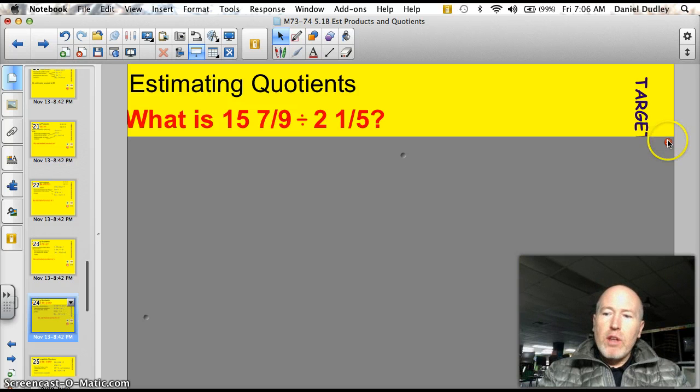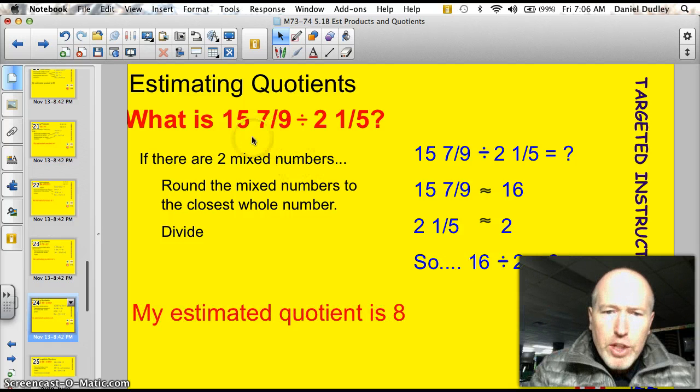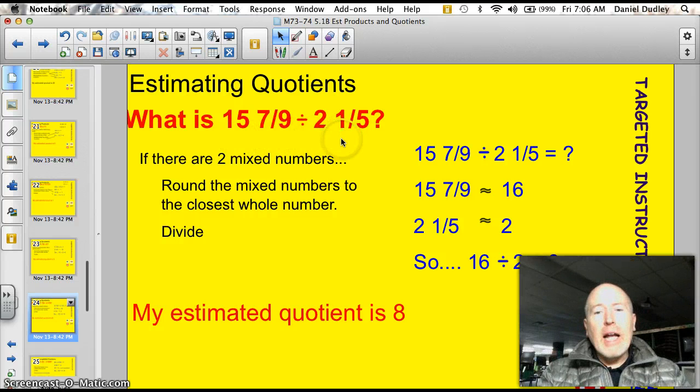Let's take a look. 15 and 7 nines divided by 2 and 1 fifth. Well, 15 and 7 nines is approximately 16. It's way over a half. So, 15 and 7 nines rounds to 16. 2 and 1 fifth. 1 fifth is a pretty small number, so we're just going to call that 2. So, 16 divided by 2 equals 8. Estimated quotient is 8. Let me go up and double check. 15, that's about 16 divided by about 2. Got it.